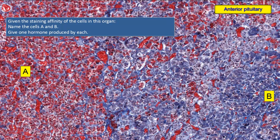Given the staining affinity of the cells in this organ, name the cells A and B and give one hormone produced by each. This is the same anterior pituitary section. Chromophils have affinity for either acidic or basic dyes. Those represented in A are acidophils; those represented in B are basophils. Basophils are generally larger than acidophils.